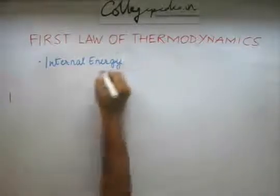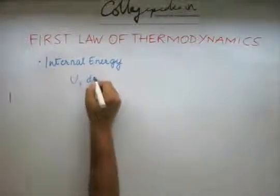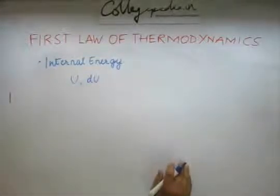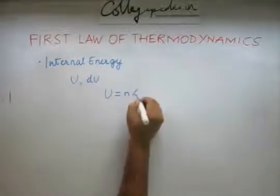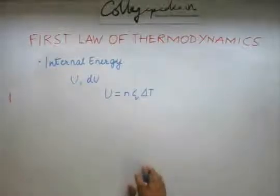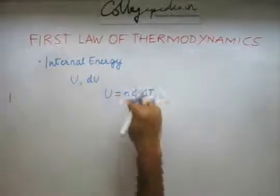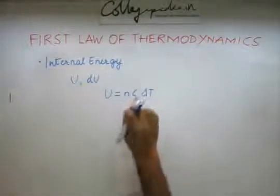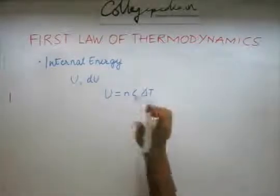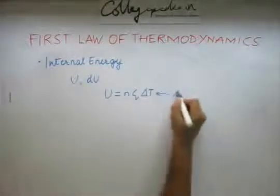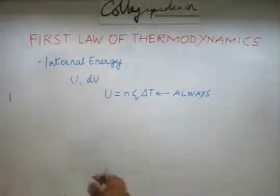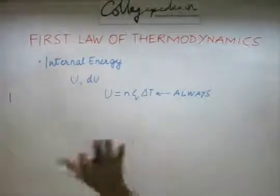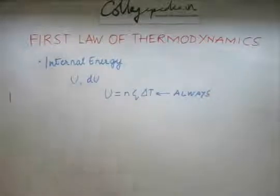This again is represented in terms of u or in differential form of du. This is defined as N times Cv into delta T. This is the same as before. This is specifically used for the internal energy. Note that this is true always, immaterial of whether the gas is going under a constant volume process or constant pressure process or any process. This is going to remain same for all processes.